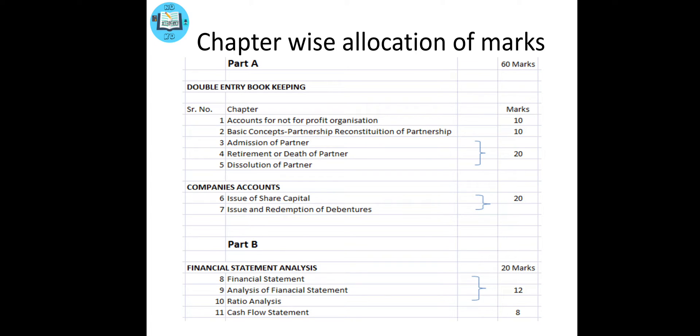Next is Company Accounts, which is a diversion from the above chapters, namely issue of share capital and issue and redemption of debentures. Part B contains the Financial Statement Analysis, which includes analysis of financial statements, ratio analysis, and cash flow statement.